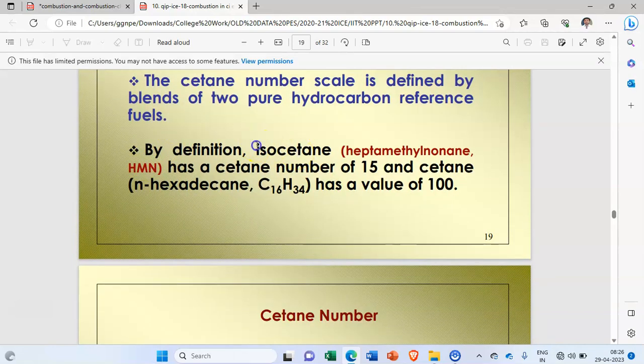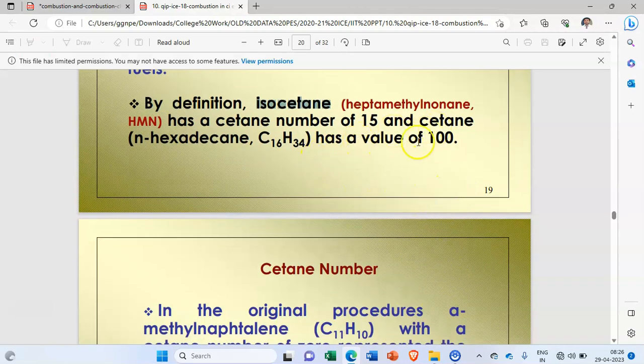The cetane number scale is defined by blends of two pure hydrocarbon reference fuels. By definition, isocetane, also called heptamethylnonane (HMN), has a cetane number of 15, and cetane N-hexadecane, C16H34, has a value of 100. That means N-hexadecane C16H34 has the higher cetane number of 100.